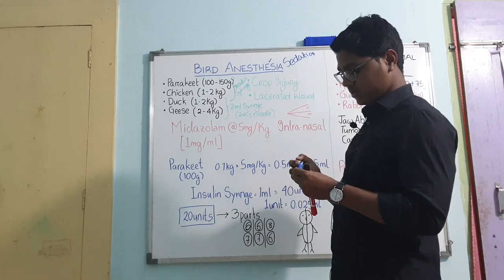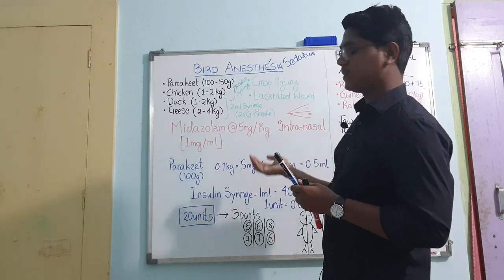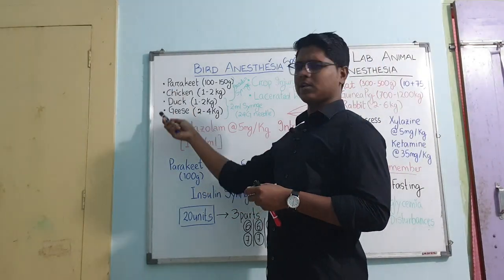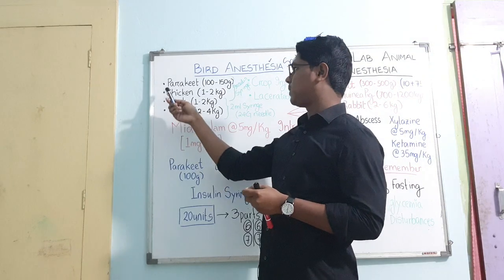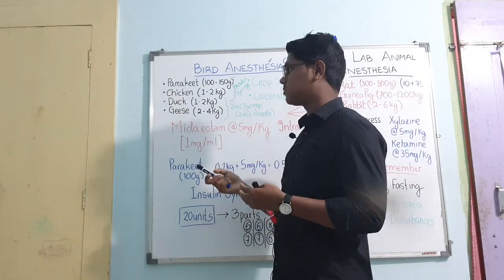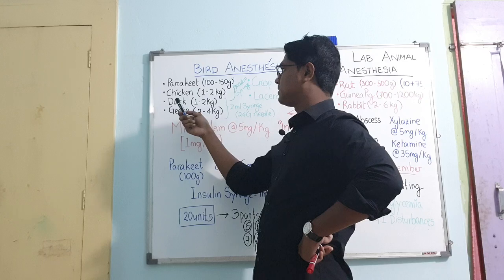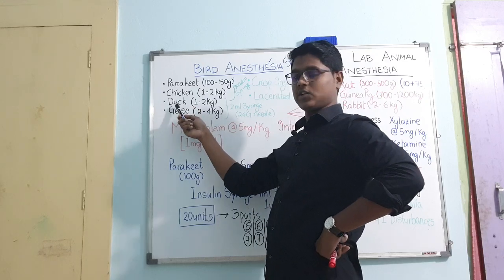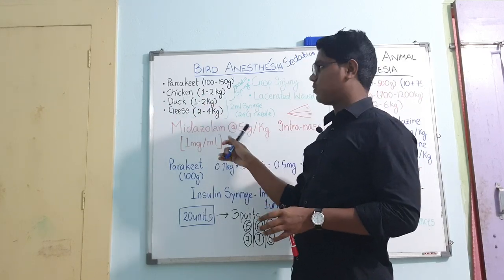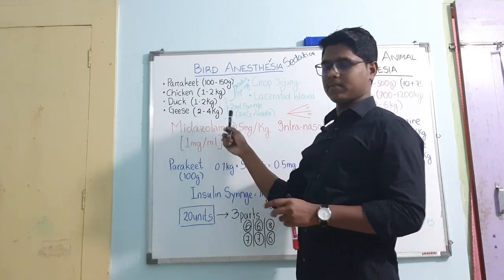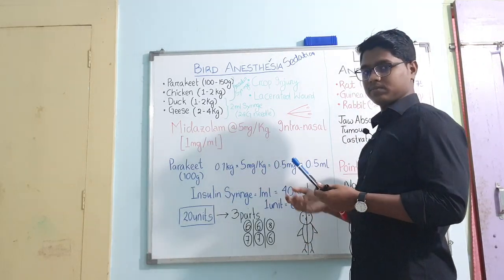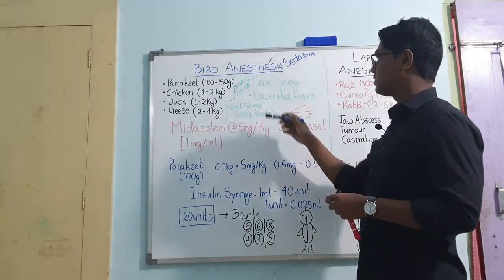The birds most commonly presented to your veterinary dispensary are: parakeet (sometimes mistaken for parrot), chicken, dog, and geese. These are adult body weights, but they can vary. Next, we look at which surgeries you will mostly encounter.